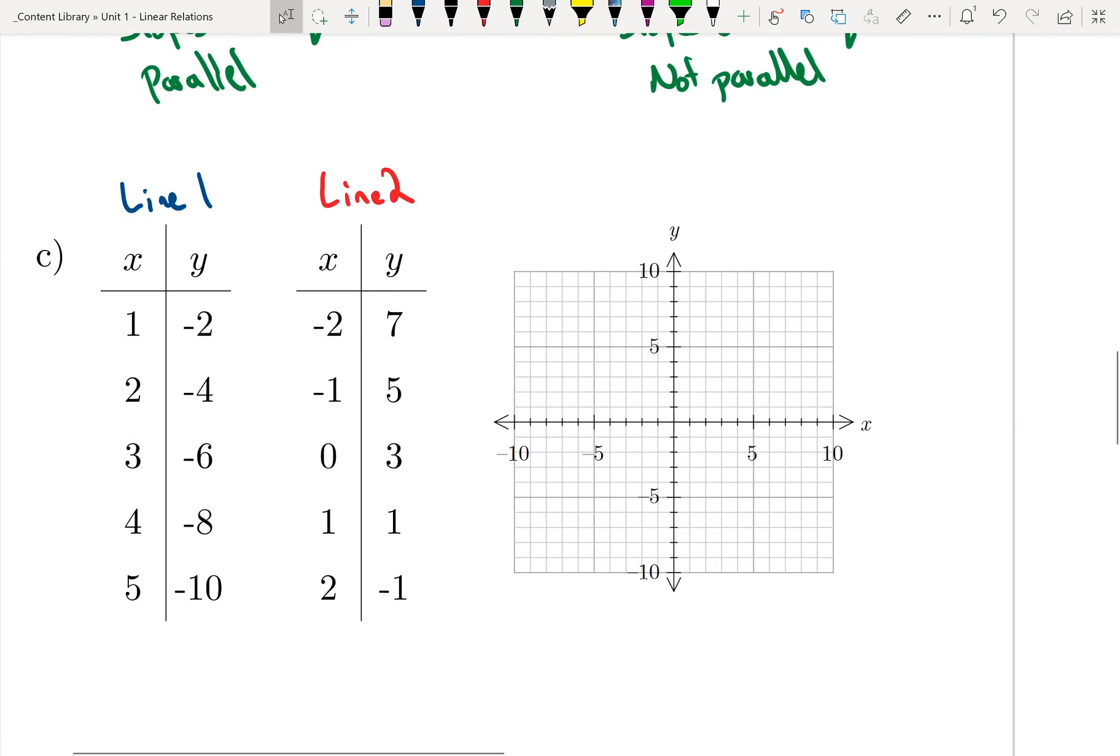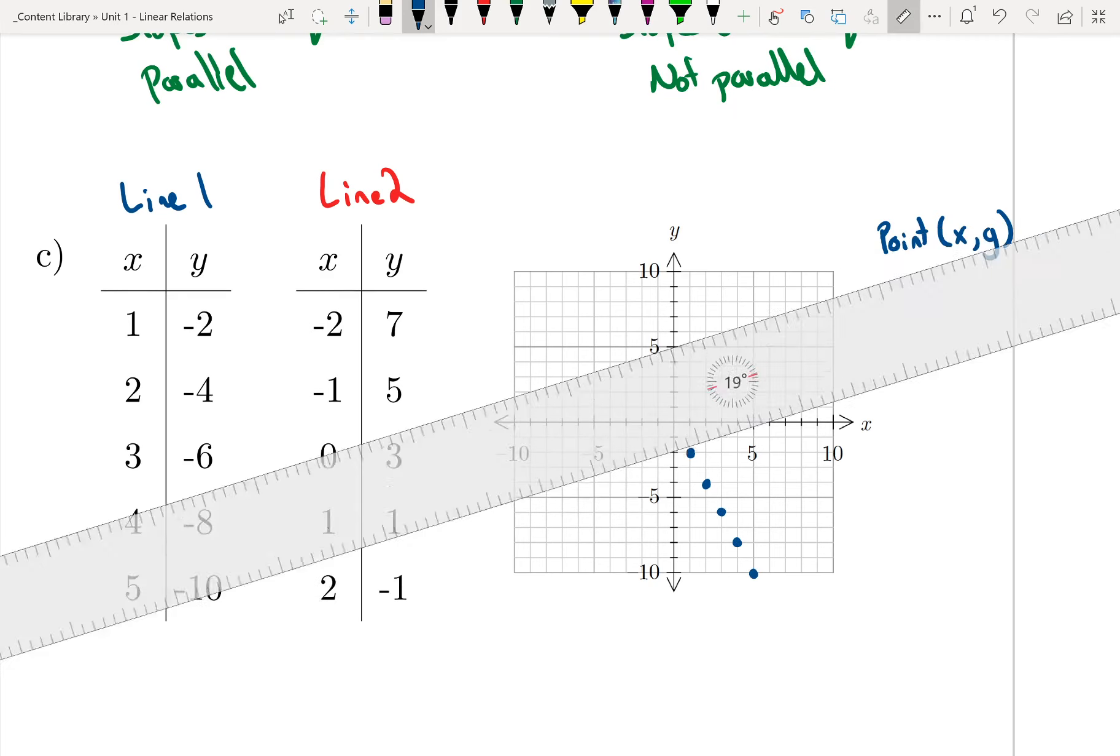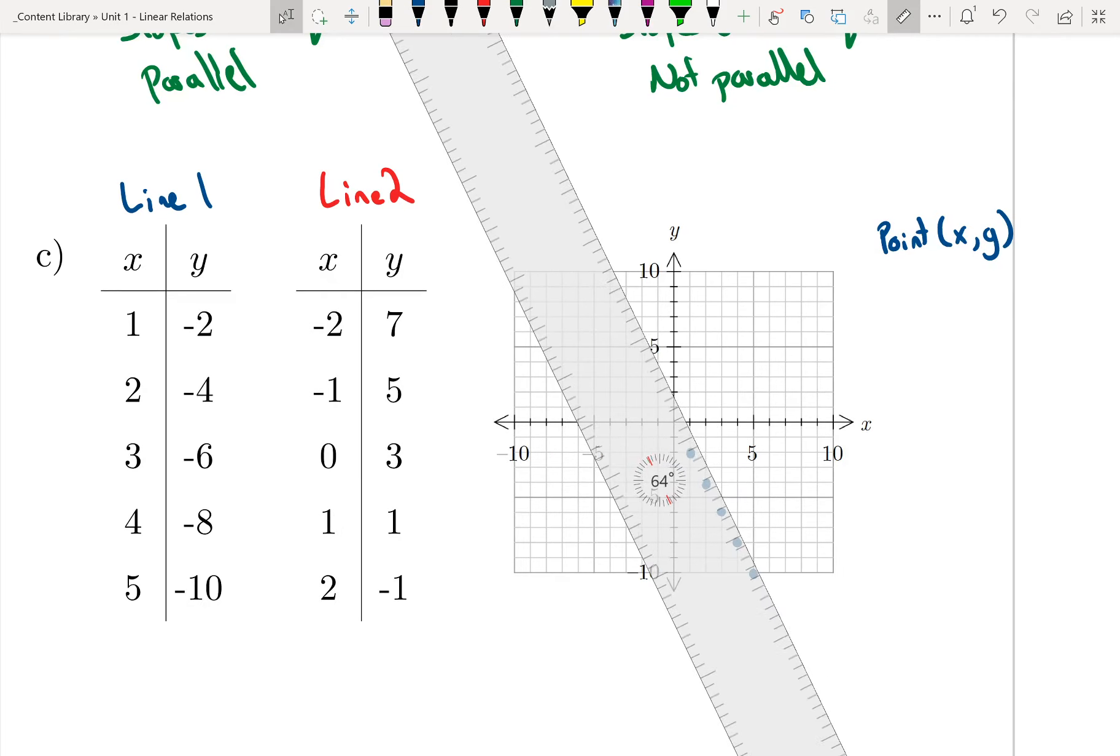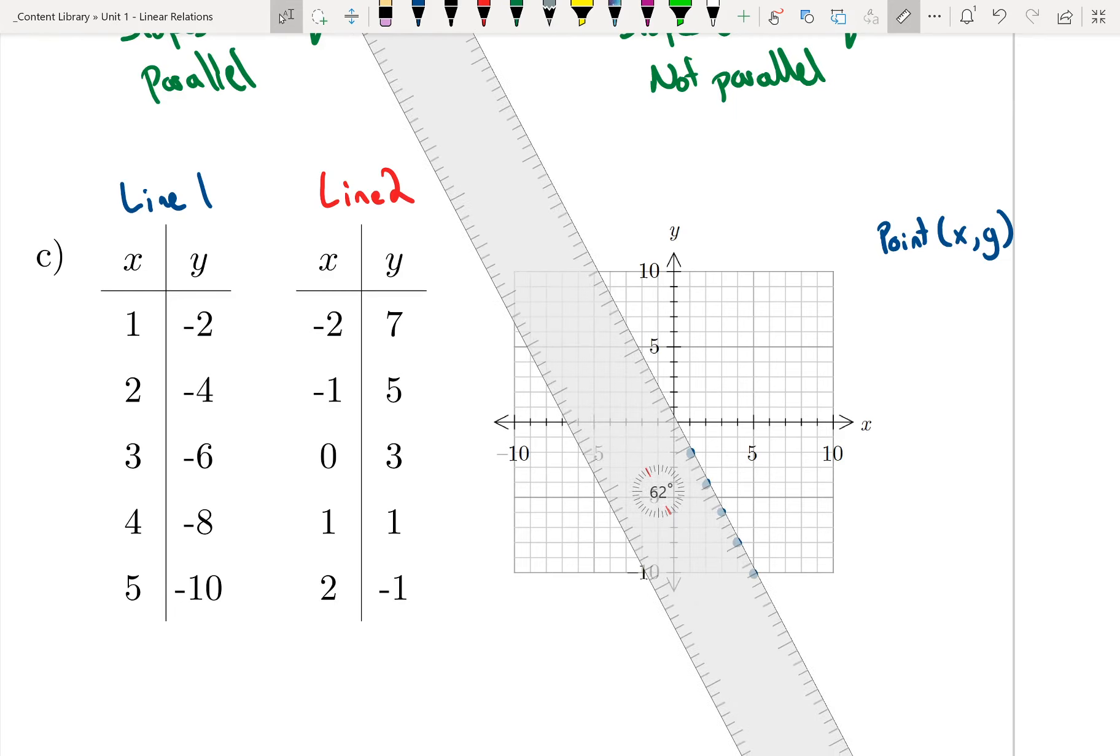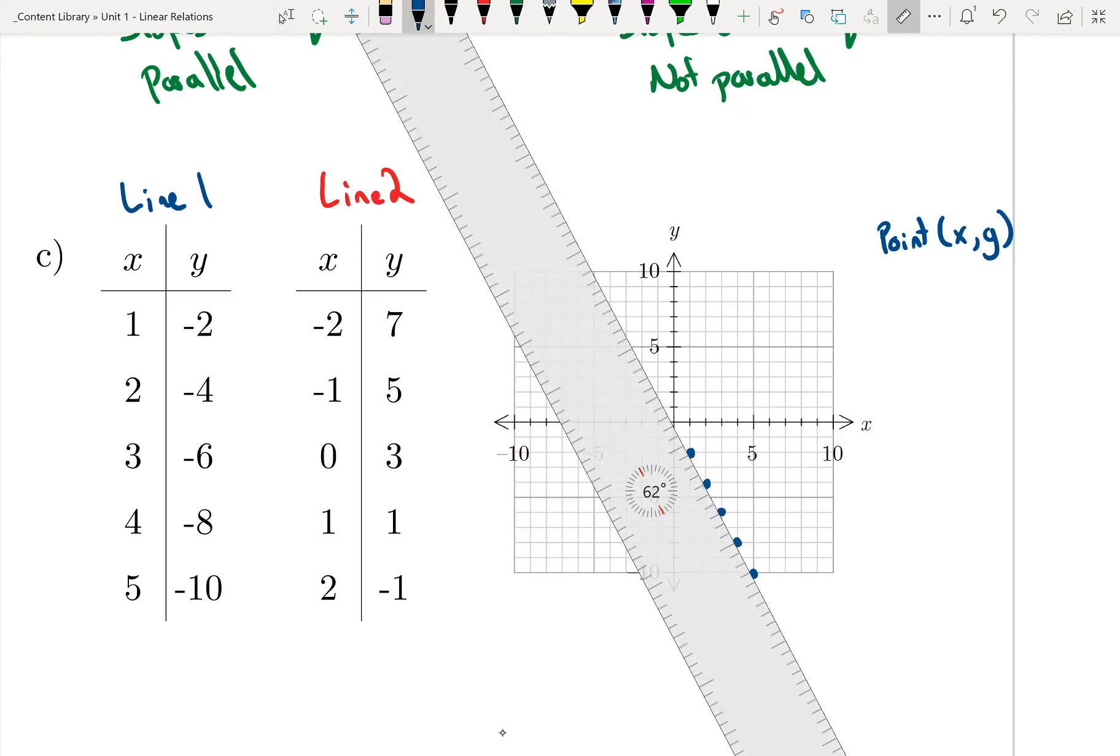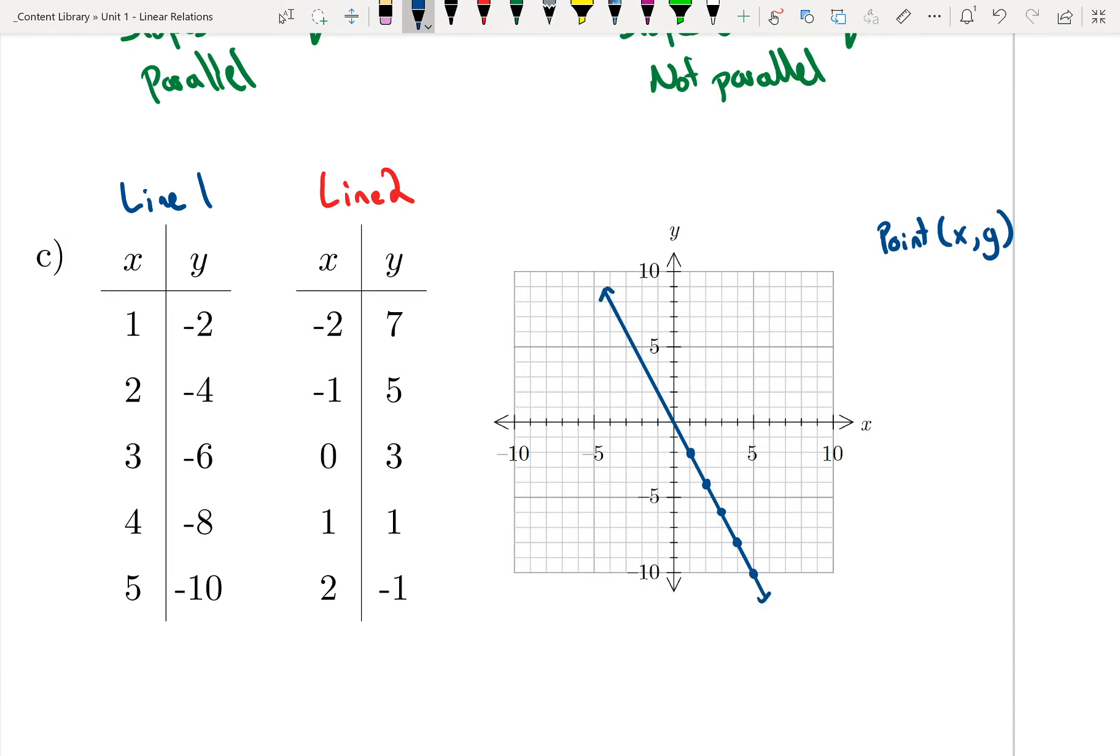So on my graph, I'm going to plot line 1. Remember a point is just the coordinates of x and y. So at 1 and negative 2, there is a point. At 2 and negative 4. At 3 and negative 6. Negative 8, negative 10. I'm going to draw a straight line through these points. So there is my first line.